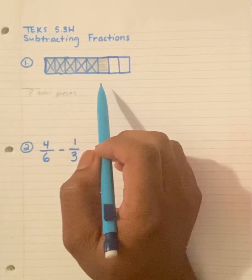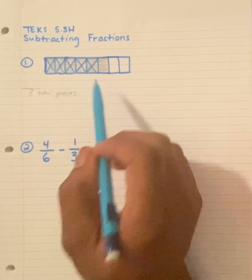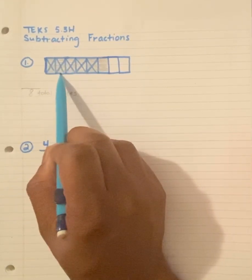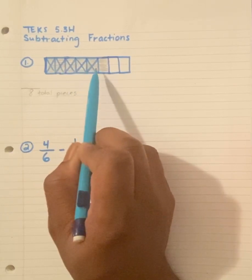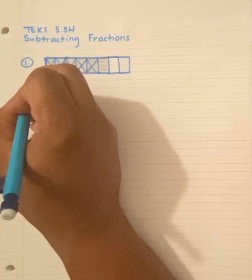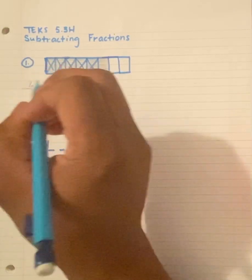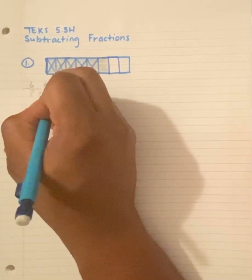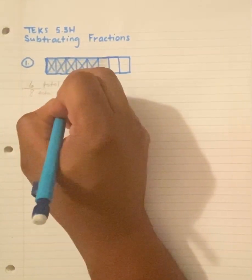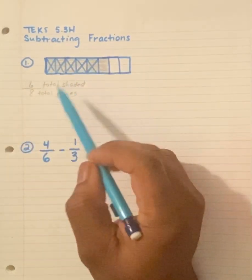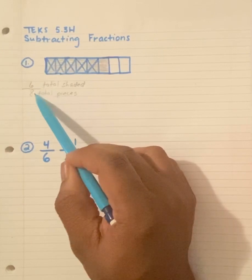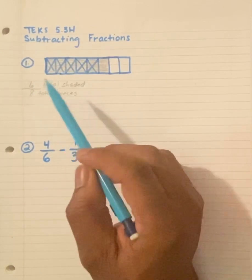Now, of these total pieces, how many are shaded? 1, 2, 3, 4, 5, 6. So 6 is my numerator because it represents total shaded. In other words, 6 out of 8 total pieces are shaded.